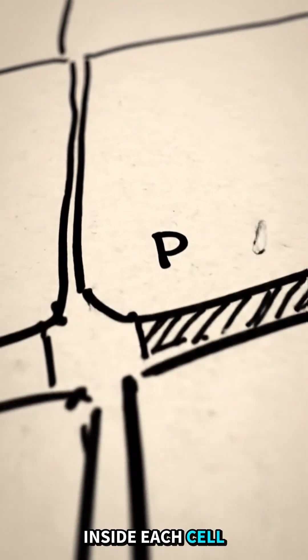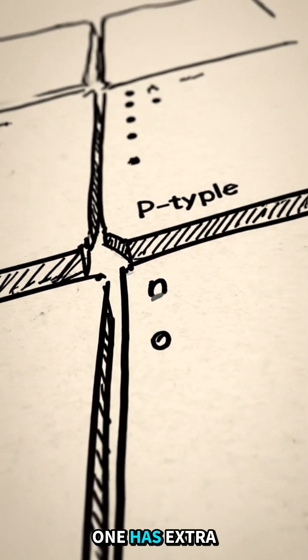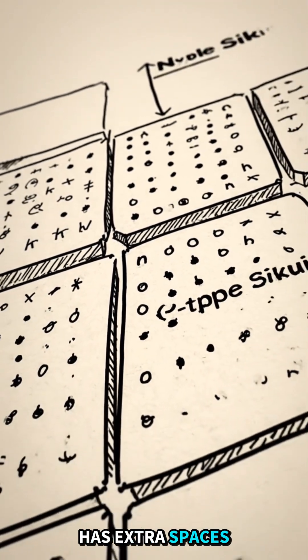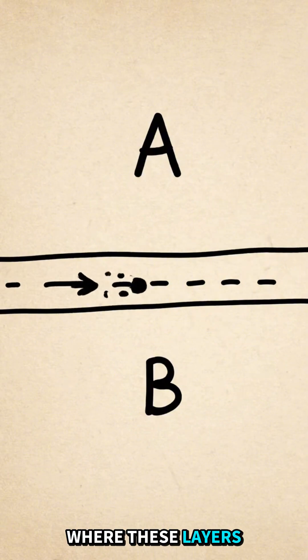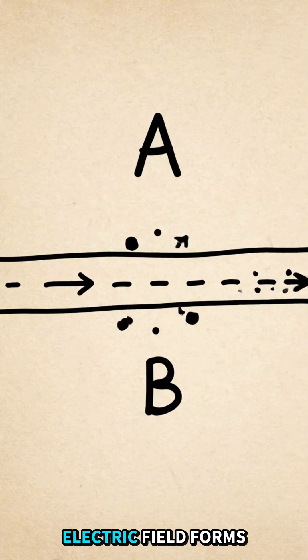Inside each cell, there are two layers. One has extra electrons, and the other has extra spaces for electrons, called holes. Where these layers meet, an invisible electric field forms.